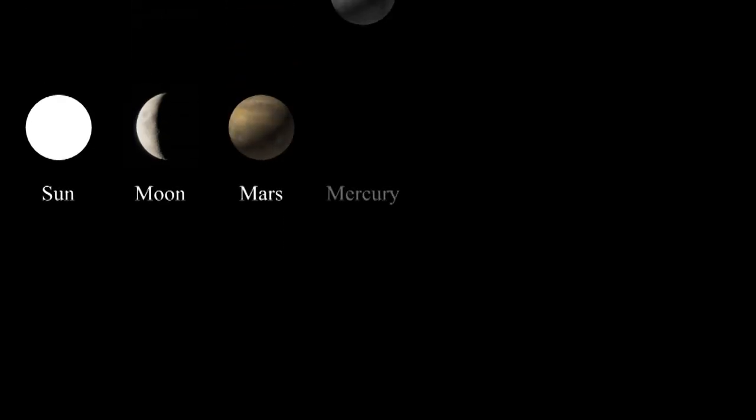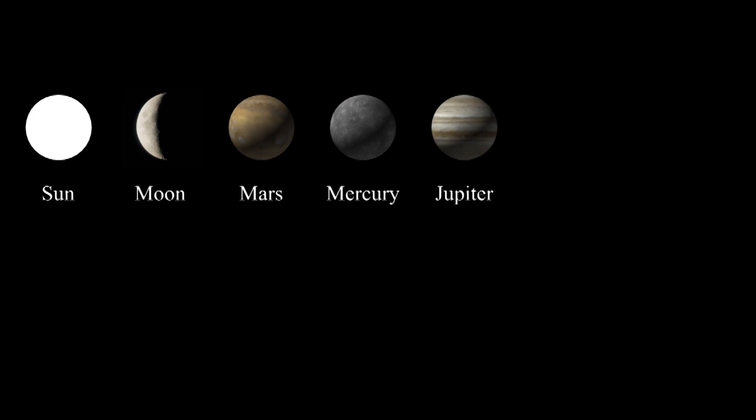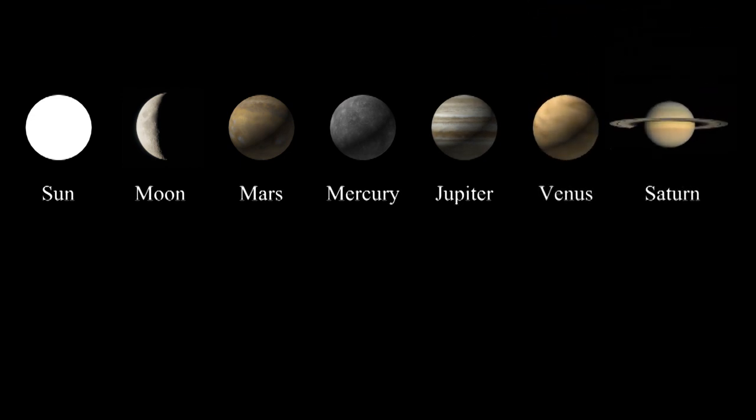The ancient Romans knew of seven astronomical objects that were not stars. There's the sun, the moon, and the planets Mars, Mercury, Jupiter, Venus, and Saturn.